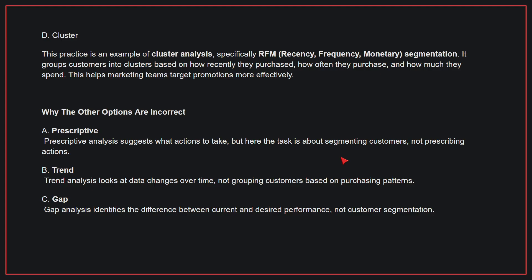Why the other options are incorrect? A: Prescriptive. Prescriptive analysis suggests what actions to take, but here the task is about segmenting customers, not prescribing actions. B: Trend. Trend analysis looks at data changes over time, not grouping customers based on purchasing patterns. C: Gap. Gap analysis identifies the difference between current and desired performance, not customer segmentation. Therefore, the correct answer is D.